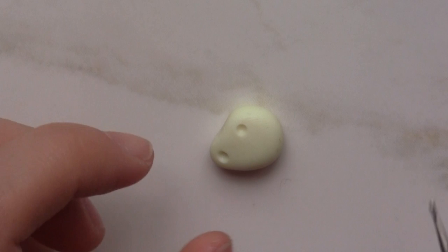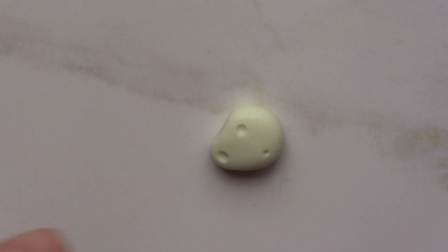Kodama has different size eyes, so use two ends of the dotting tool. Fill the indents with black clay and use dotting tool to press them in.